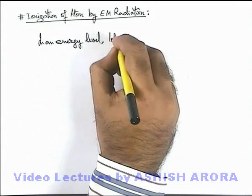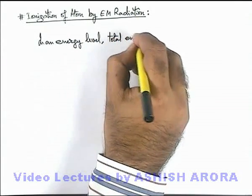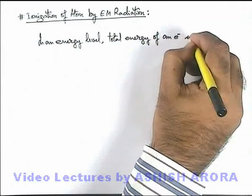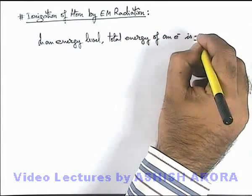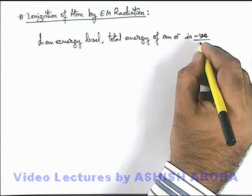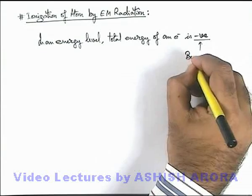We know that the total energy of an electron is negative. That we already obtained in any energy level, the total energy of an electron is negative. This negative energy denotes boundedness.